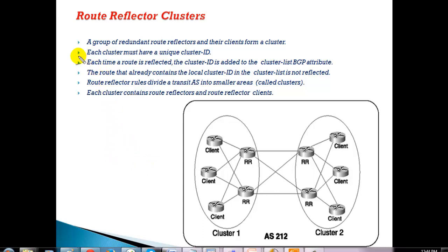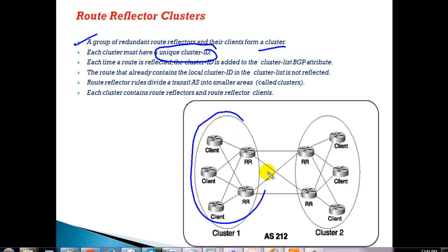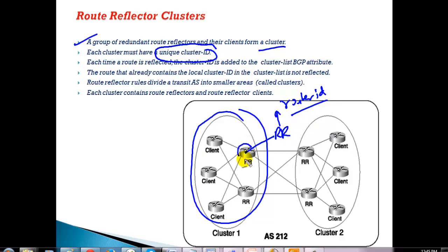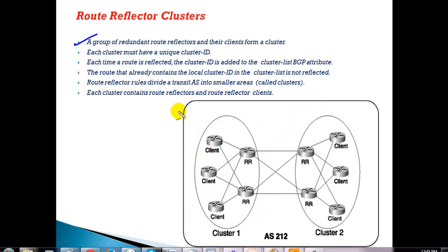A group of redundant route reflector servers and their clients form a cluster, and each cluster has a unique cluster ID. By default, the router ID of the RR server is used as the cluster ID. For example, if the router ID of the RR server is 10.1.1.1, that automatically becomes the cluster ID for that cluster. The cluster ID is what identifies a specific cluster.